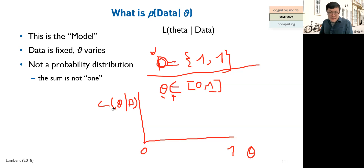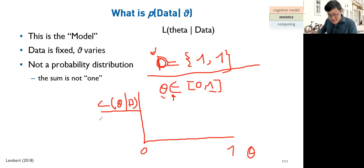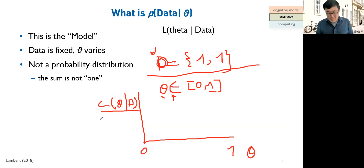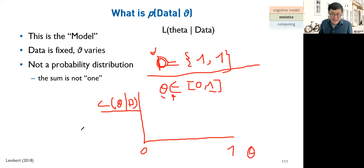Once we have the likelihood curve, we can find its peak — the maximum. This is the 'maximum likelihood estimation' (MLE). We compute the curve, find the peak, and that theta value is our parameter estimate. For one head and one tail, the maximum likelihood estimate is theta = 0.5. This is maximum likelihood estimation: find the likelihood curve, find its peak, and that's your parameter.